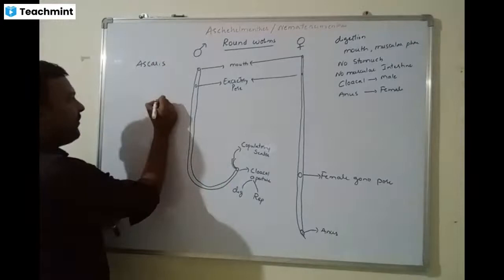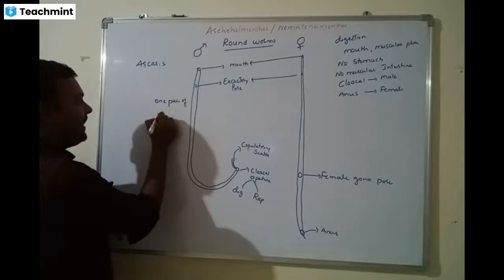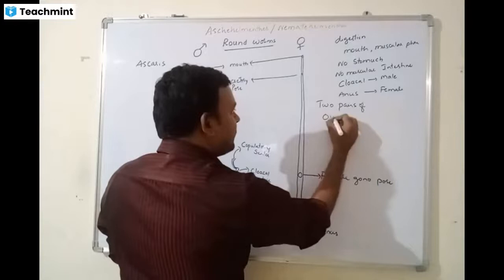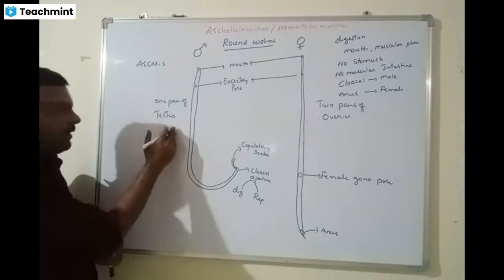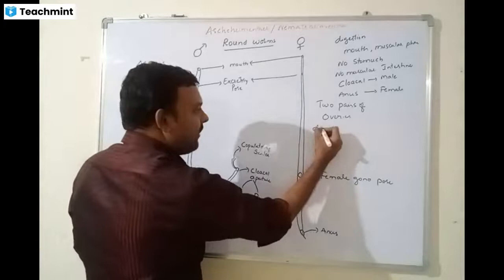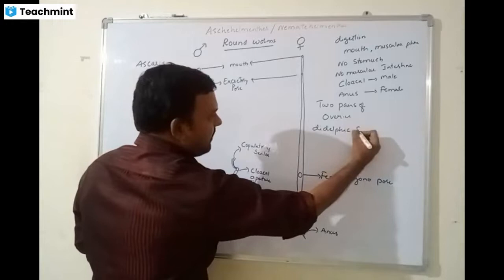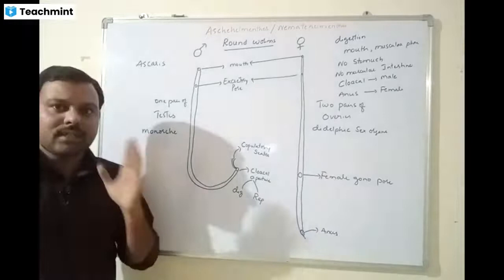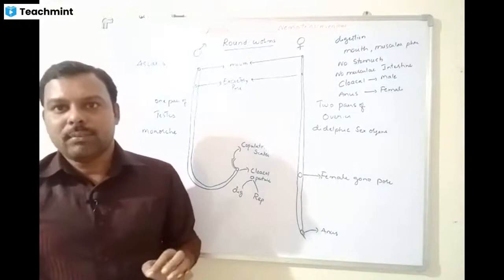In males there is only one pair of testes — we call this monorchic. In females there are two pairs of ovaries — we call this didelphic sex organs. These are the internal differences we can observe. Sexual dimorphism is first seen starting from Nematihelminthes.